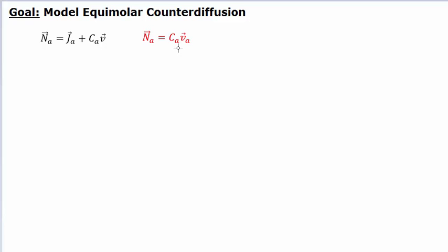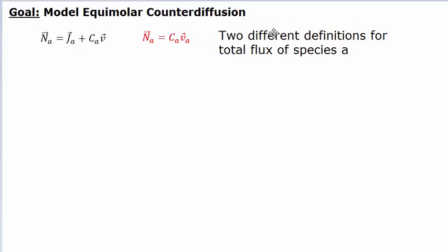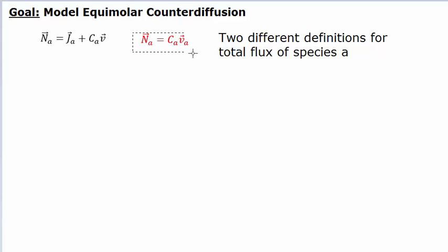Another way you could express the total flux, or the convective flux, is the concentration of that species times its particular velocity. Note that it looks similar, but it's actually quite different. So these are two definitions for the total flux of a species, and they are both valid. We're going to want to be able to choose how we want to incorporate this one into the previous one.